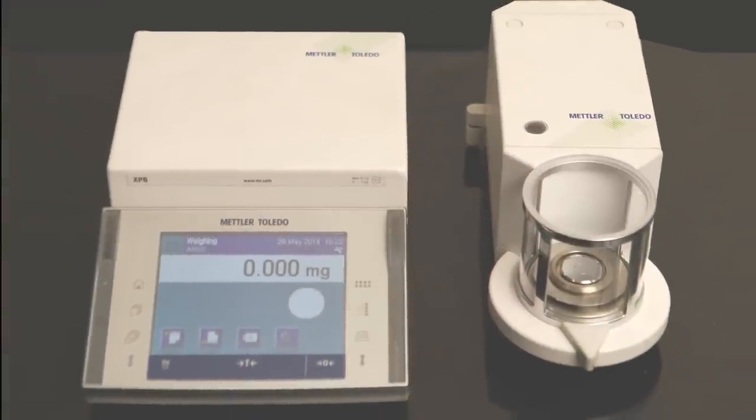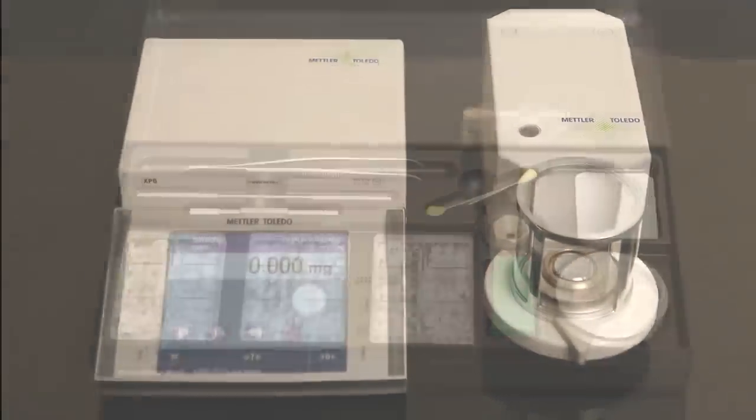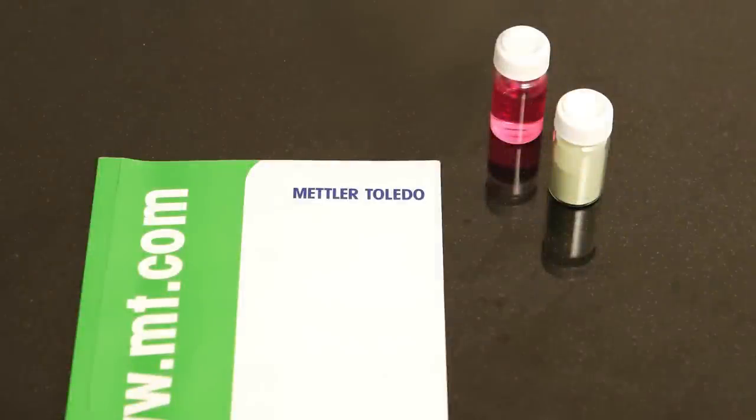For DSC sample preparation you need a microbalance placed on a stone table, the crucible box with crucibles, a crucible sealing press, a lab journal, and of course the samples.